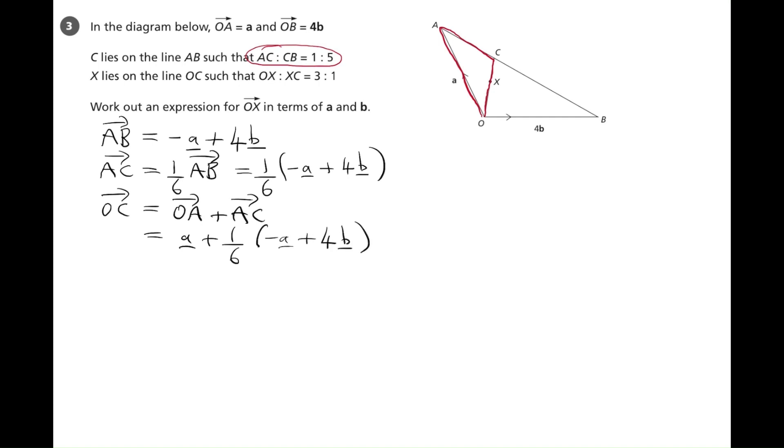We now need to simplify this. So if we multiply out the bracket, we'll have a. We've got one sixth multiplied by minus a, which is minus one sixth of a. And we've got one sixth multiplied by four, which is four over six lots of b.